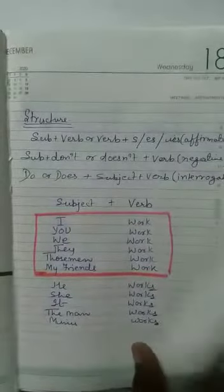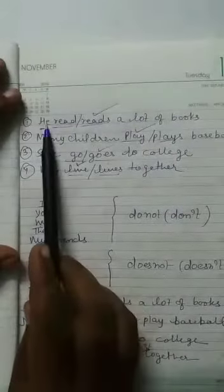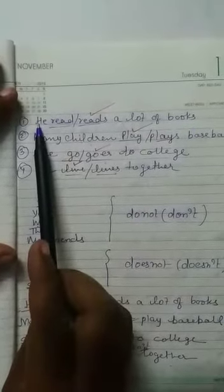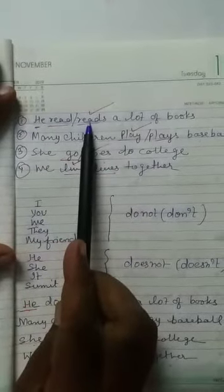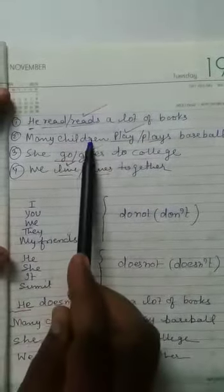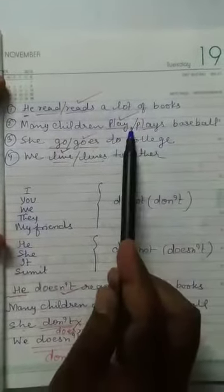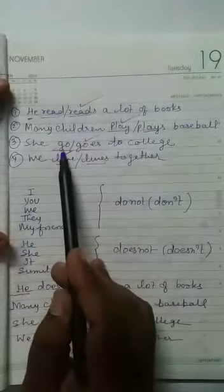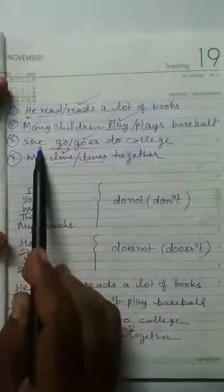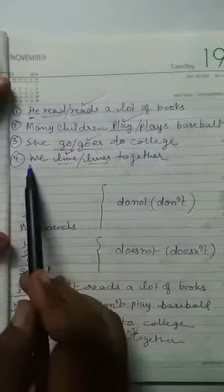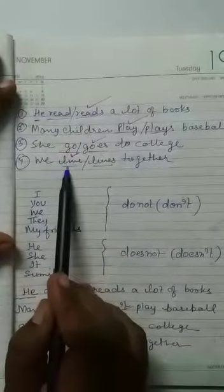Now, with some examples: 'He read or reads a lot of books?' With a singular subject, we add s, so 'reads' is correct. 'Many children play or plays baseball?' — 'play' is correct because we are talking about a plural noun. 'She go or goes to college?' — singular noun, so 'goes'. 'We leave or leaves together?' — plural noun, so 'leave'.